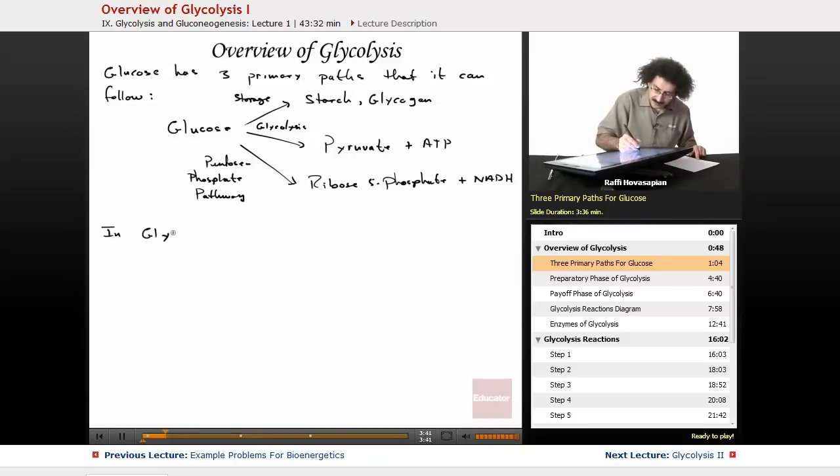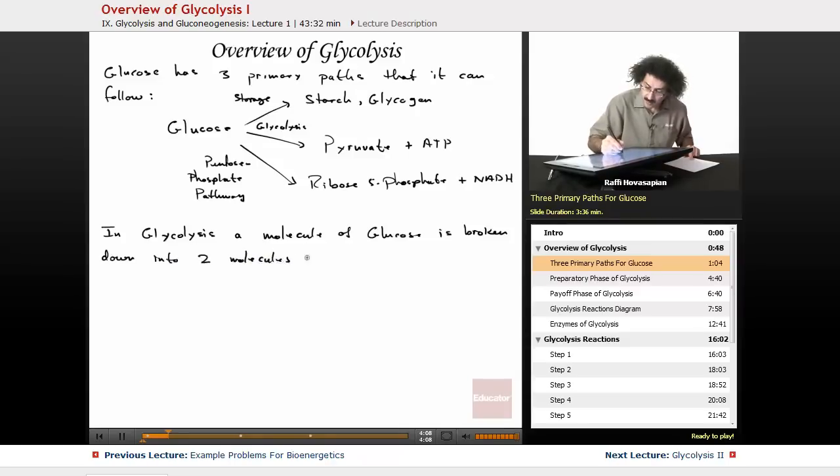Now in glycolysis, a molecule of glucose is broken down into two molecules of pyruvate. And it's amazing, it still just amazes me. Pyruvate in 10 enzyme-catalyzed steps. Of course, we know that every reaction in the body is catalyzed by an enzyme. In 10 enzyme-catalyzed steps.